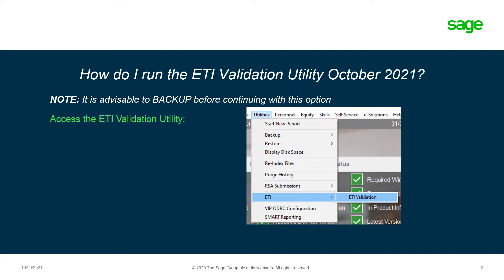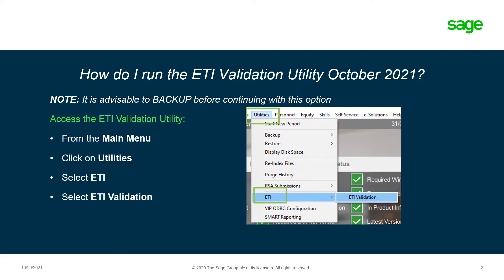So how do you access this utility? From the main menu, click on Utilities, select ETI, then select ETI Validation.